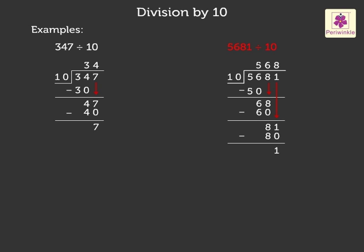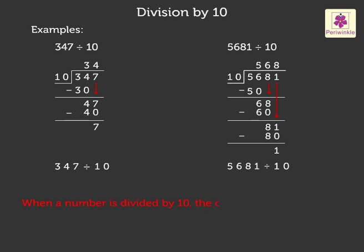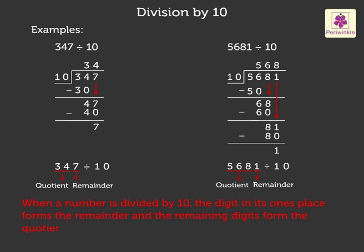Now look at the second example: five thousand six hundred eighty-one divided by ten. Here, we got the quotient as five hundred sixty-eight and remainder as one. Did you notice that when we divided both the numbers by ten, the digit in their one's place formed the remainder and the remaining digits formed the quotient?